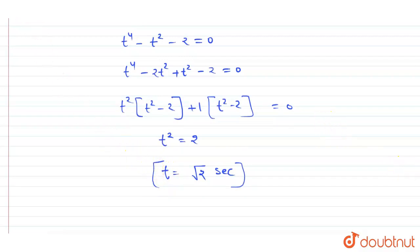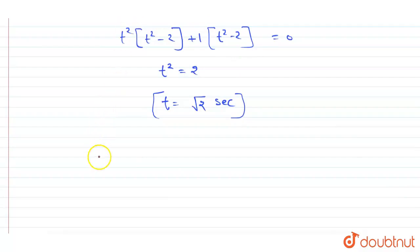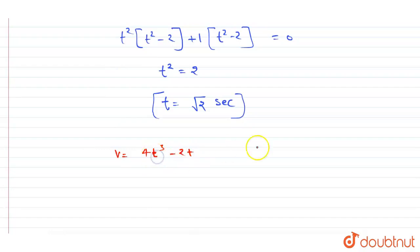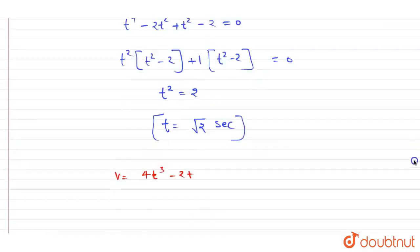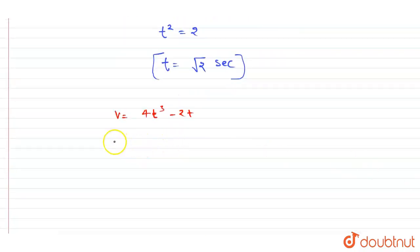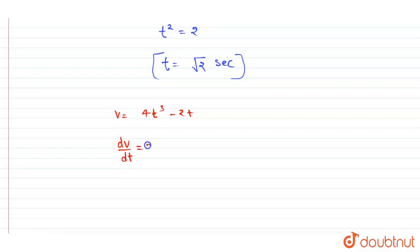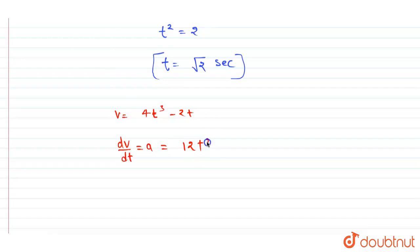Now we need to find the acceleration. We have velocity v equals 4t³ minus 2t. Differentiating with respect to time gives acceleration dv/dt, which equals 12t² minus 2.